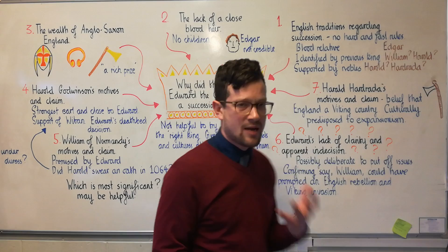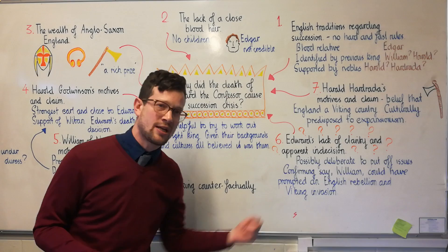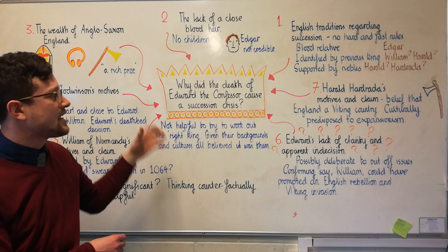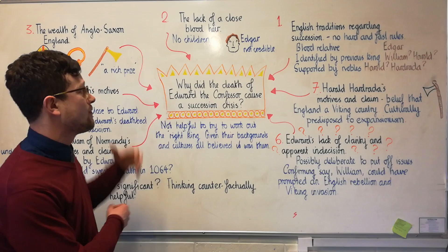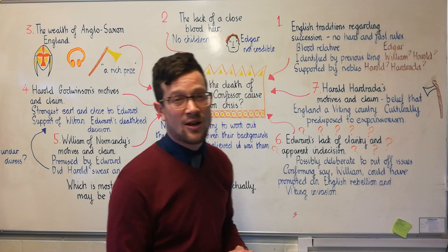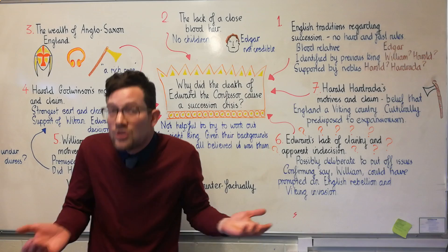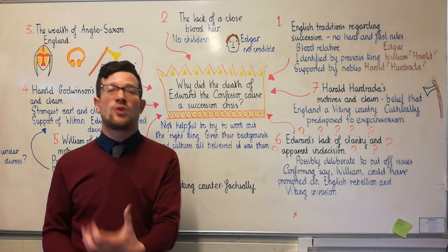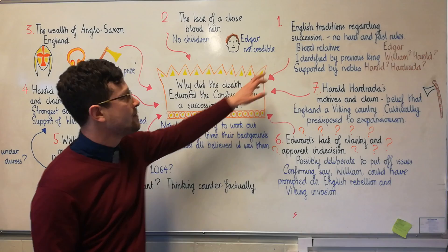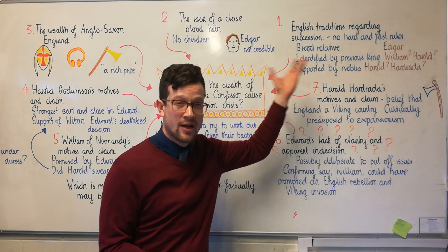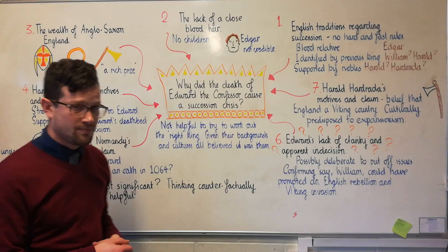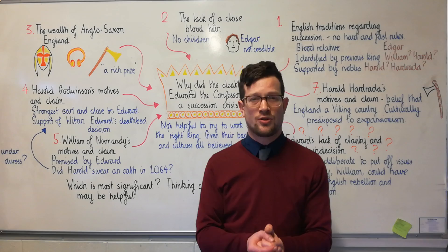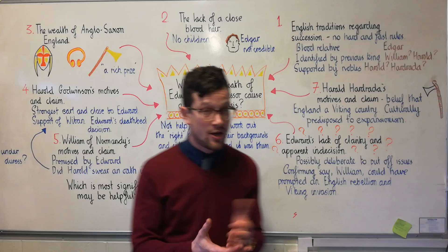More helpful might be to have a play around with counterfactuals. To work out which factor was most significant, try changing each of these slightly and see if that makes a difference. Here's an example: let's assume that Edward had lasted for another 10 years — Edgar was 24 years old, had built up support, and was a strong, respected warrior. If those things were true, perhaps the succession crisis might have been headed off. I encourage you to pause the video, go through each of the reasons discussed, have a play with the counterfactuals, and try to work out which of these — or which combination — you think was the most significant in causing the succession crisis of 1066.